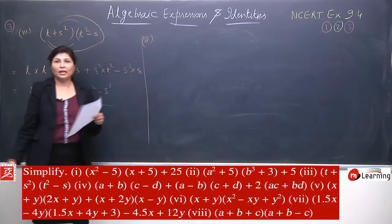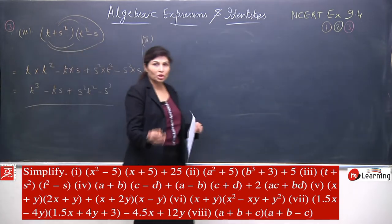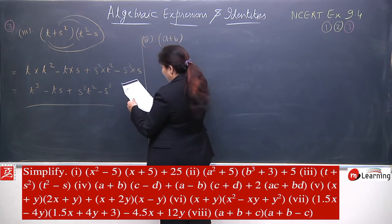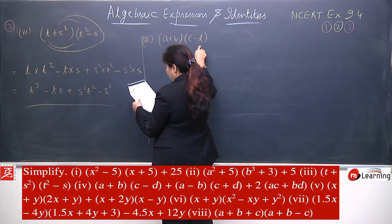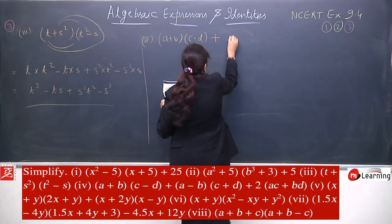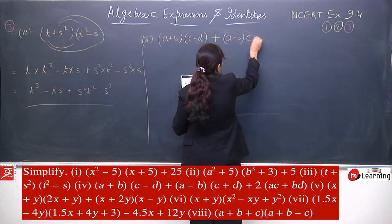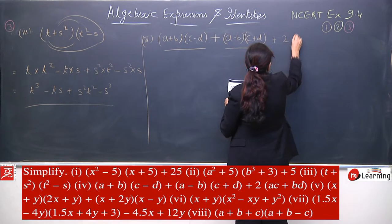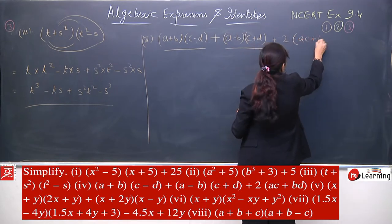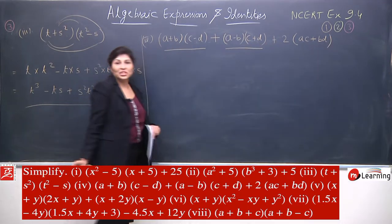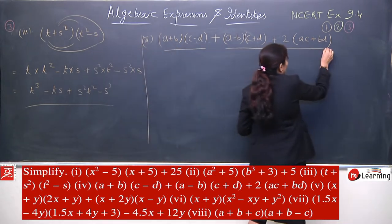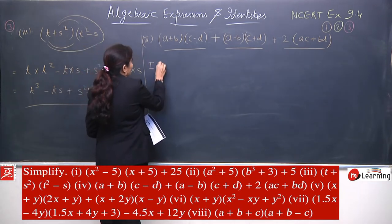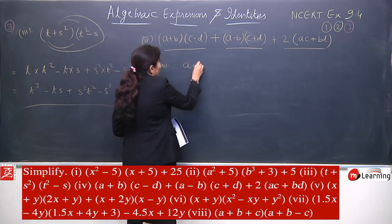Now fourth — we are taking all these sums so that if any NCERT-related question comes, there is no problem. The fourth question looks interesting: (a+b)(c-d) plus (a-b)(c+d), and there is a third term — plus twice of ac plus d. This is the question. How do we do it? We have three parts. We can solve all three parts separately and add them.